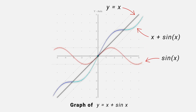We can see that y equal to x plus sin x is above the line y equal to x when x lies between 0 and pi. And when x lies between 0 and minus pi, sin x becomes negative, so y equal to x plus sin x is below the line y equal to x.